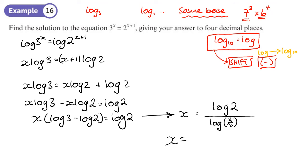So fraction button, shift, divide, get log to the base 10, 2. Go to the bottom, shift and divide button again, 3 over 2. And I get an answer to 4 decimal places of 1.7095. So there we go.